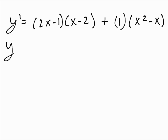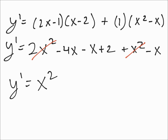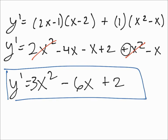Expanding, that's going to be 2x squared minus 4x minus x plus 2 plus x squared minus x. Combining like terms: 3x squared minus 6x plus 2. Wait, there's a plus here, so correcting that — you get 3x squared minus 6x.